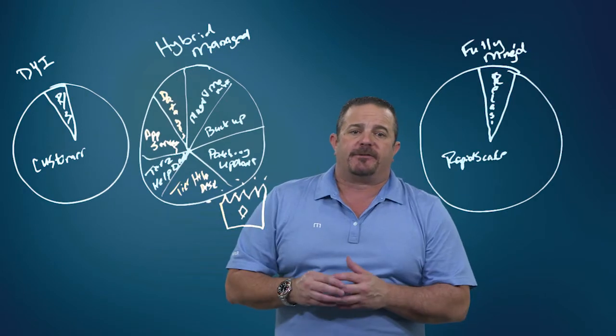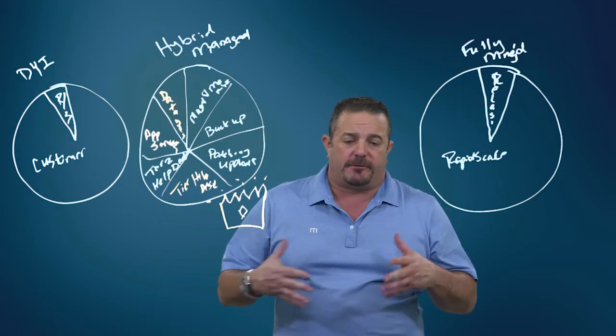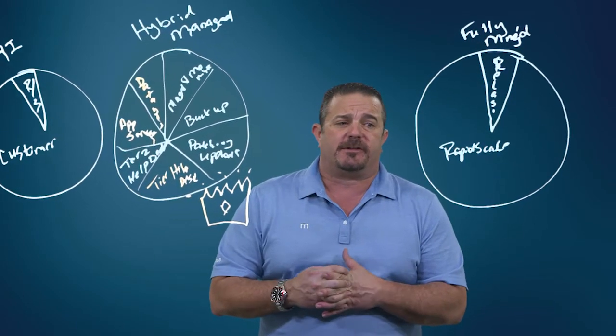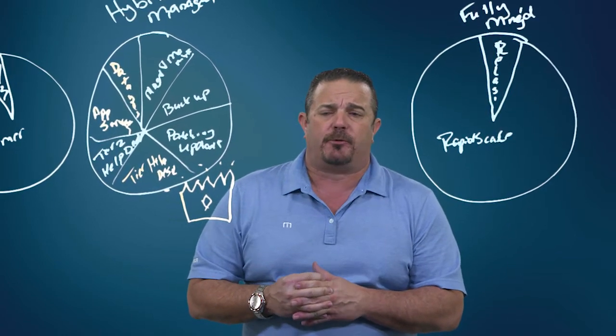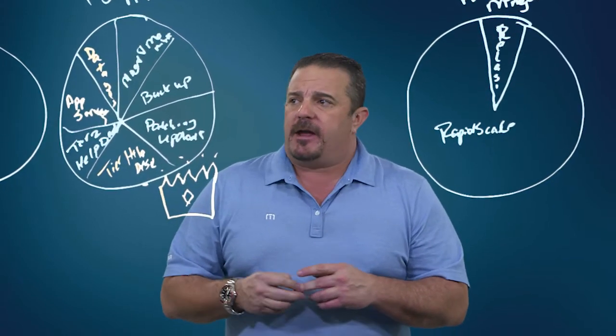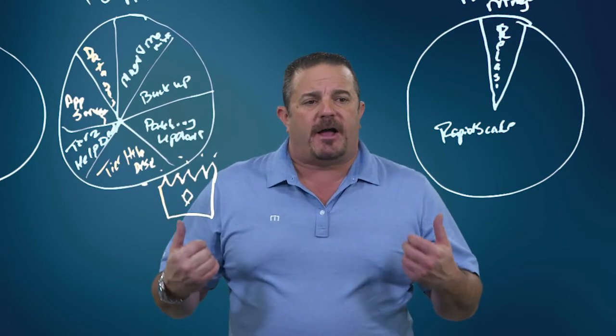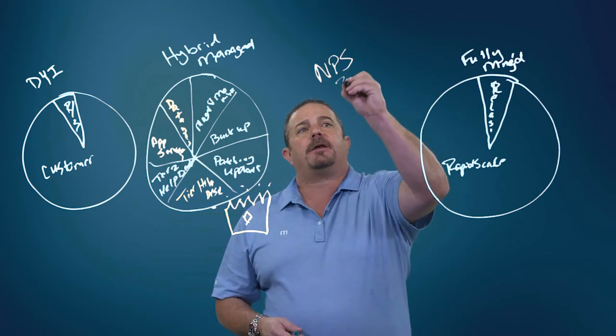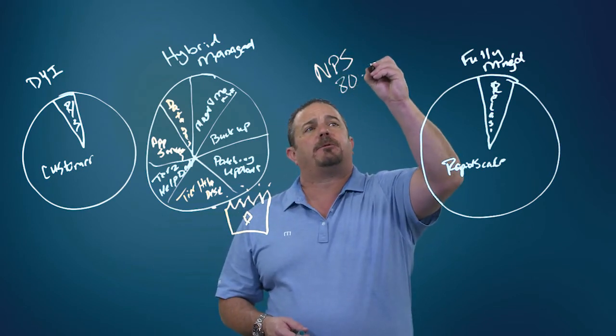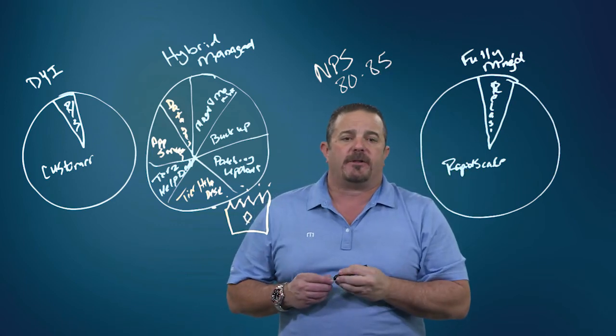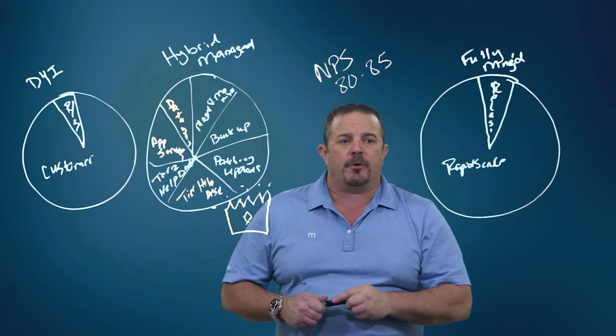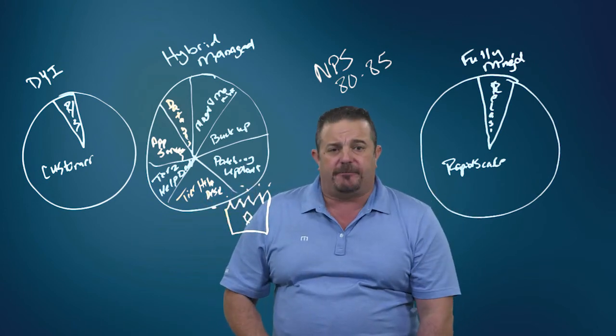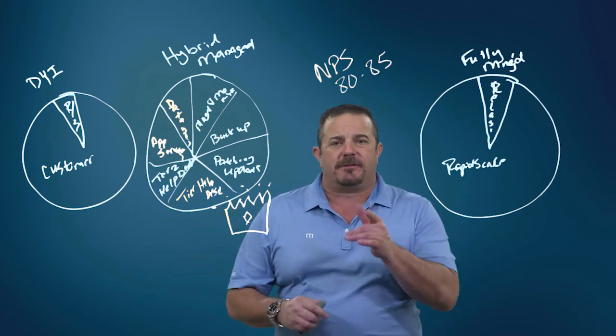We have customer satisfaction scores into the mid 90s, which we're really happy with—95.7% on average for three years. We're one of the first cloud companies coming out and utilizing NPS scores. Today our NPS score is hovering over the last month between 80 and 85, and that's phenomenal. That's in the likes of really great technology companies like Apple. So we talked a little bit today about what makes us different. Hopefully you've got this. Thank you, and we'll see you soon.